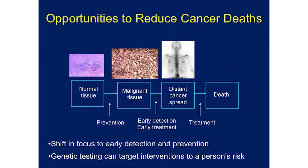This is a somewhat simplistic schema, but it gives you a sense of the timeline of how we see cancer developing and also of the successes we've had in terms of our therapies. You can see a progression of cancer: initially normal tissue at the top, followed by a transition to malignant tissue, and then unfortunately in some cases to distant cancer spread. This is an example of a patient with a bone scan showing spread of breast cancer to the bones — metastasis. Unfortunately, we usually aren't in a position to cure disease that's spread distantly, and thus we will see people progress on to an early death.